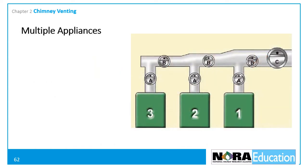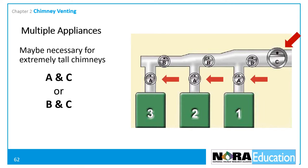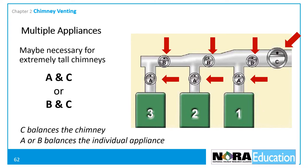Extremely tall chimneys may require multiple draft controls to enable proper draft. In these situations, one control should be installed at location C, and individual controls at either A or B locations. The control at C balances the chimney, and the ones at A or B balance draft for the individual appliances.